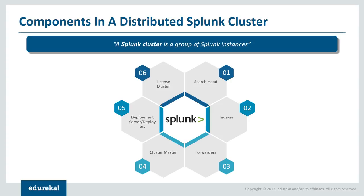Next is the Deployment Server and the Deployer. There is a very slight hairline difference between the two. The Deployment Server sends configuration and app updates to all the components, including forwarder, indexer, and search head. While the Deployer sends configuration and app updates only to the search head. We also have a License Master which prevents you from exceeding your purchased limit. Suppose you have registered Splunk for 500 GBs of data per day and you are about to exceed that limit — you will get notified by the License Master that you cannot ingest any more data for the day.